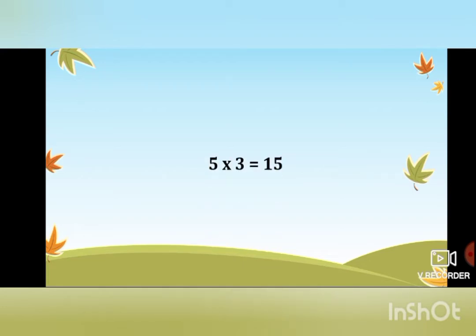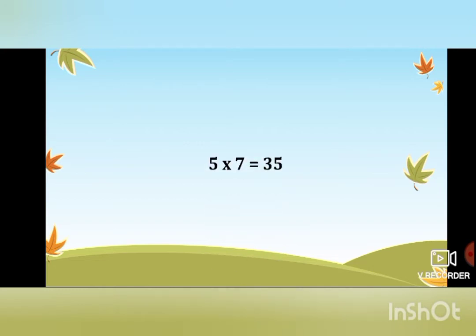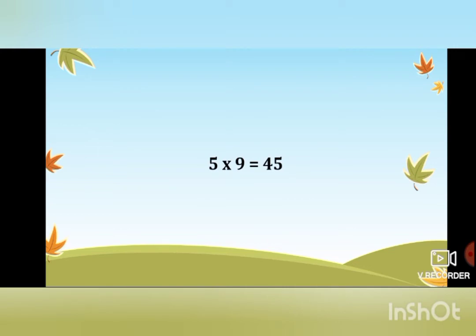Five threes are 15. Five fours are 20. Five fives are 25. Five sixes are 30. Five sevens are 35. Five eights are 40. Five nines are 45. Five tens are 50.